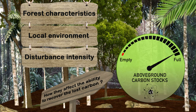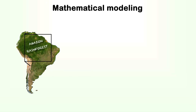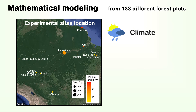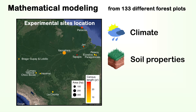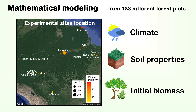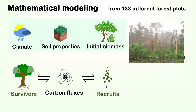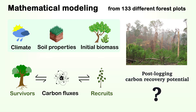In this paper, we used mathematical modeling to analyze long-term inventory data from 133 different forest plots across Amazonia. We linked regional differences in climate, soil properties, and initial biomass with survivors' and recruits' carbon fluxes to provide Amazon-wide predictions of post-logging carbon recovery potential.